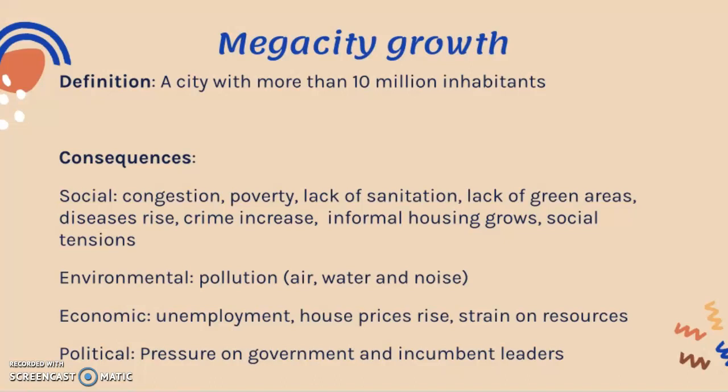Environmental pollution can be air pollution, water pollution, and noise pollution. Economic issues include unemployment because of the strain on jobs — a lot of people and not enough jobs — house prices rise because of demand for housing, and there's a strain on economic resources, which can also lead to higher pricing in general. Finally, political consequences are pressure on the government to deal with overpopulation, overuse of resources, and pressure upon incumbent leaders like presidents and prime ministers to act if these consequences become too large.